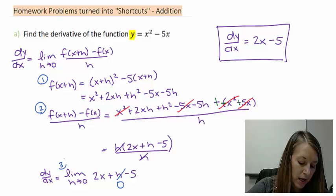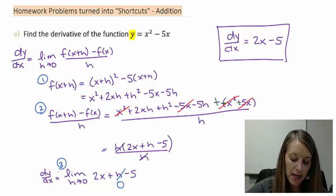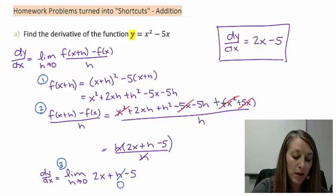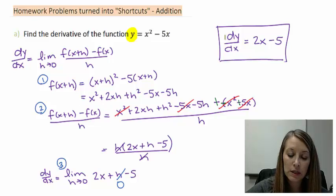The third part is taking the limit as h goes to 0, substituting 0 in for h. And so what we have left is dy dx. Notice we're using this notation because our original notation was y. So we want to keep our notation consistent.